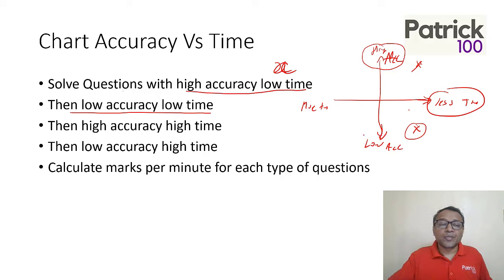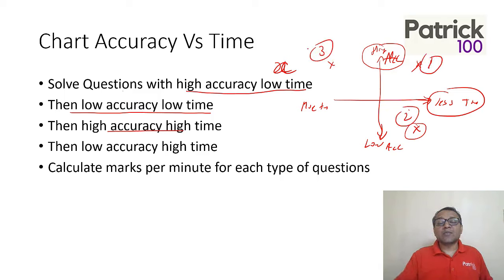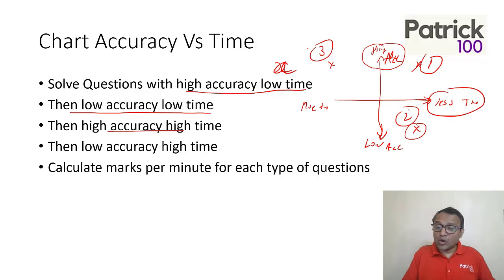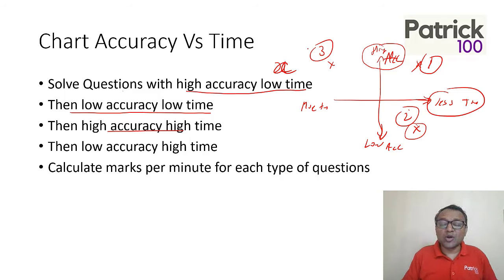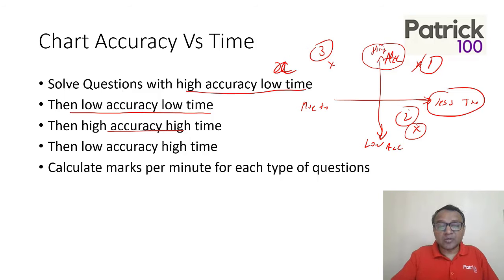Third will be questions where my accuracy is high but I take a lot of time. These would be second or third priority. Even though I'm good at them, if I take a lot of time, I automatically attempt fewer total questions, and that becomes a problem. So these are somewhat avoidable.